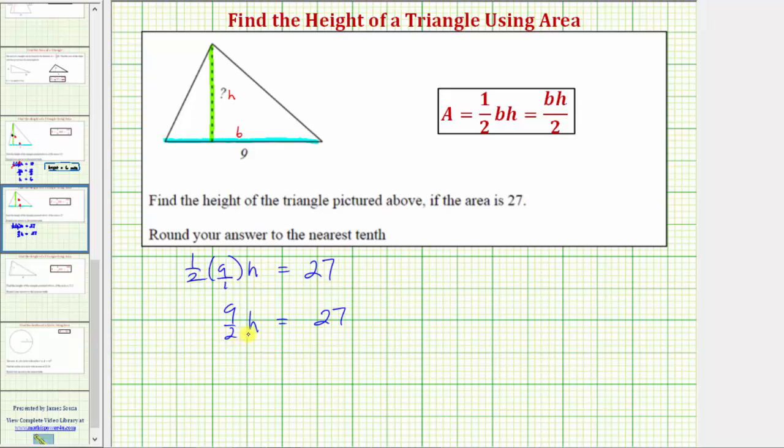and therefore instead of dividing both sides by nine-halves, we'll multiply both sides by the reciprocal of nine-halves, which is two-ninths. So we'll multiply the left side by two-ninths, and multiply the right side by two-ninths.